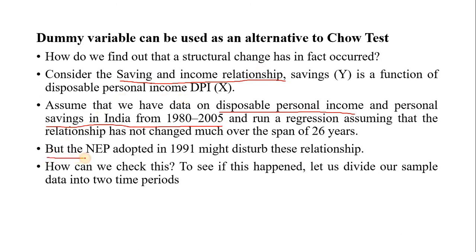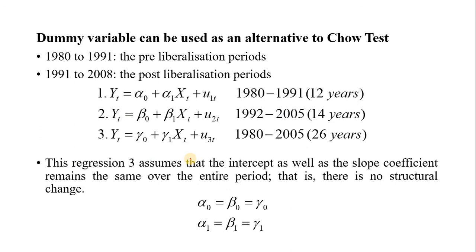But in between this period, there was a crucial policy change in India: the New Economic Policy of 1991. This policy changed everything in the country — consumption, saving, investment patterns and everything. This 1991 policy may disturb the relationship, meaning before 1991 there is a particular pattern and after 1991 there is another pattern. So we have to check whether the 1991 policy had any effect on the saving-income relationship in India.